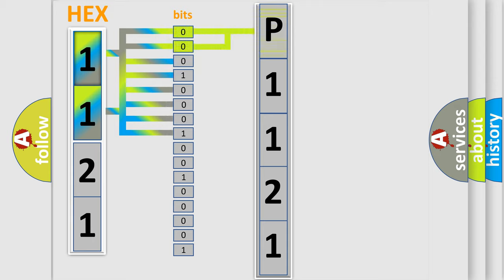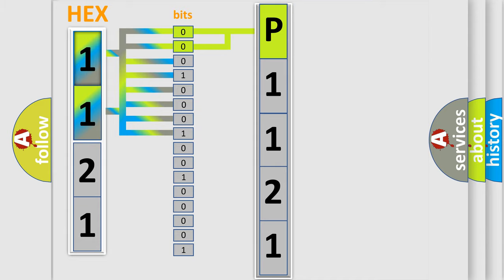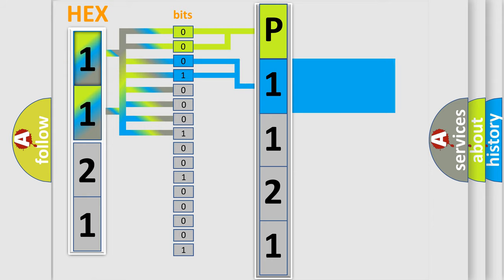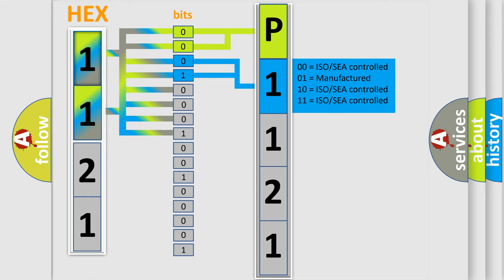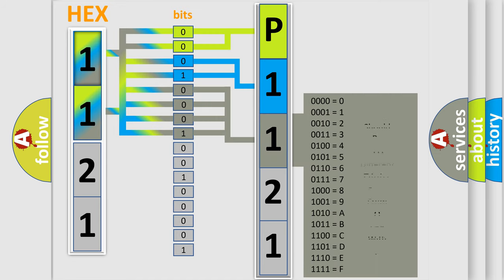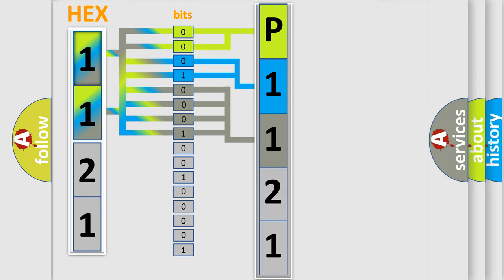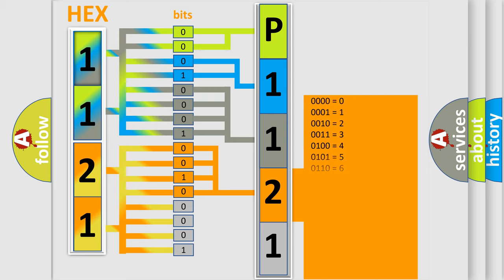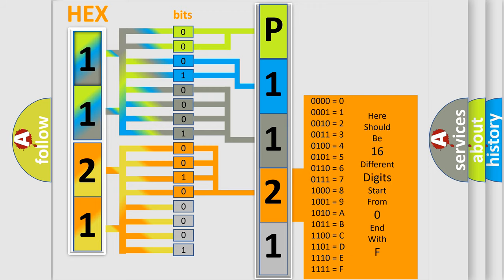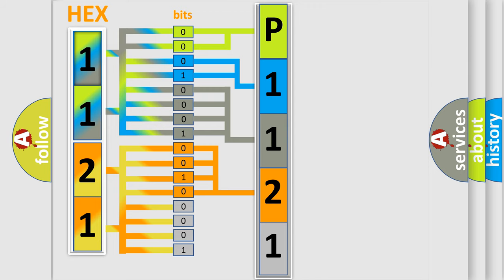By combining the first two bits, the basic character of the error code is expressed. The next two bits determine the second character. The last bits of the first byte define the third character of the code. The second byte is composed of a combination of eight bits: the first four bits determine the fourth character, and the last four bits define the fifth character. A single byte conceals 256 possible combinations.